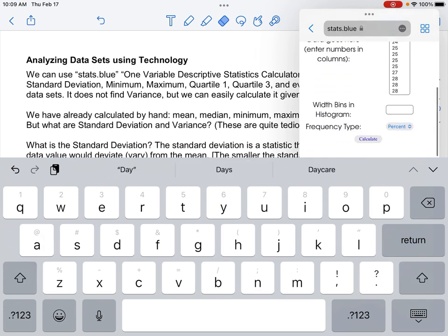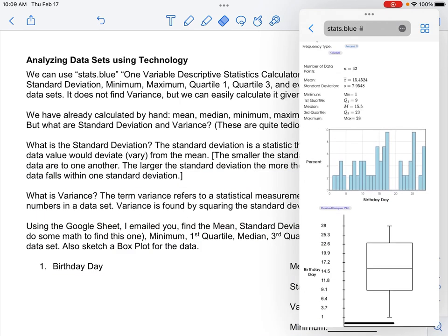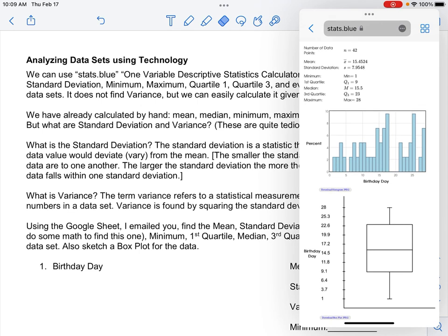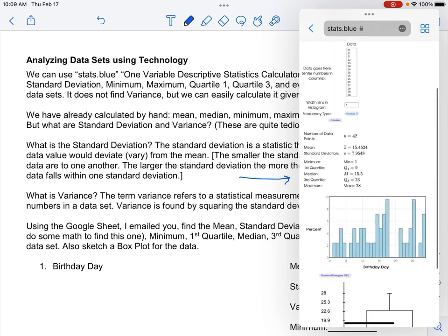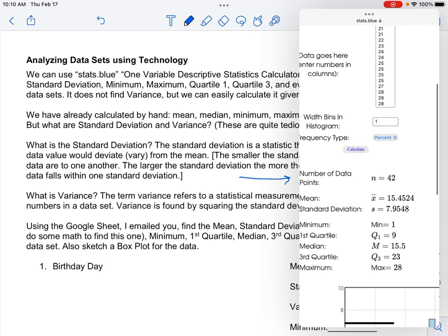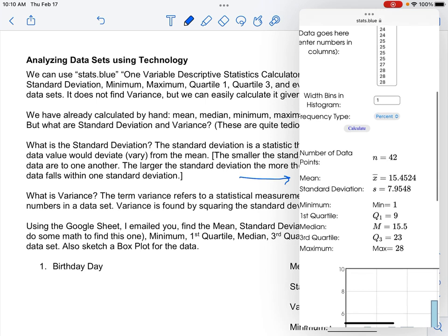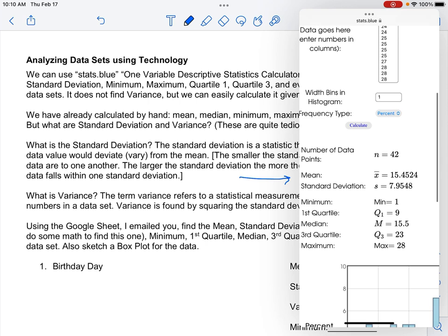So make sure when you copy it in, at least my data sets have 42 numbers. Make sure to check when you copy yours in that they always have the correct amount. So I copied my birthday day, which I'm trying to find here. I will click into the one variable descriptive statistics calculator, and I will paste it in.